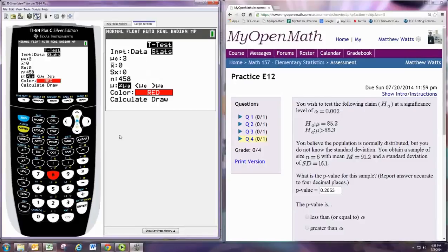And put in the 85.3. And then the mean is 91.2. Standard deviation is 16.1. And the sample size is 6. Make sure to select the right alternative hypothesis corresponding to the right-tailed test. And hit calculate.